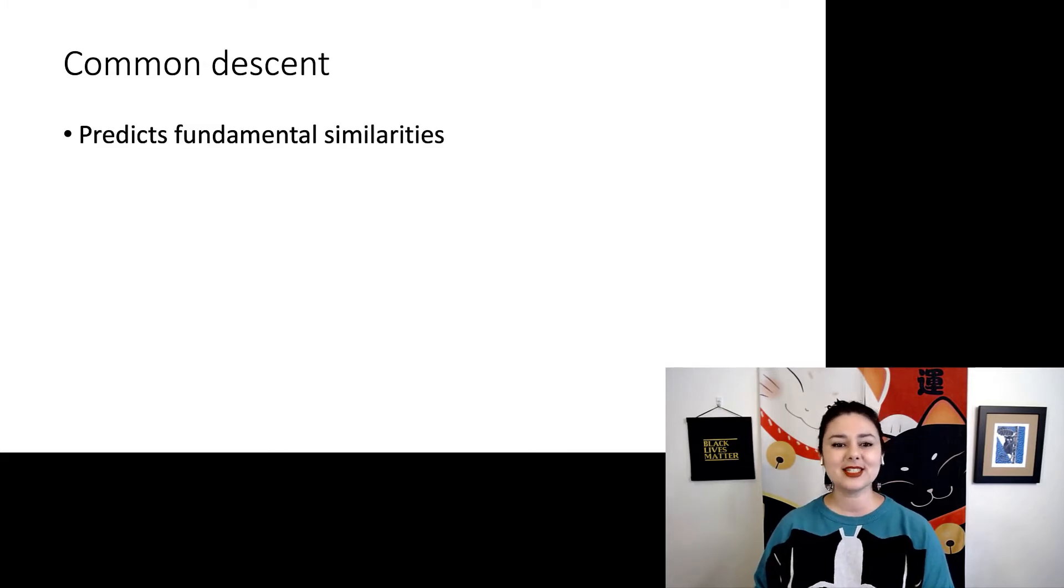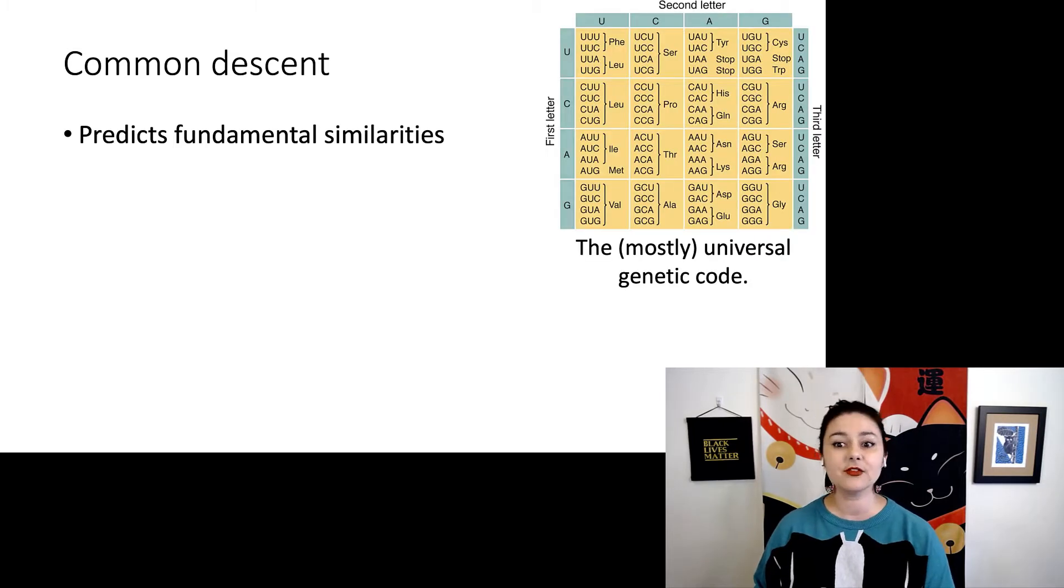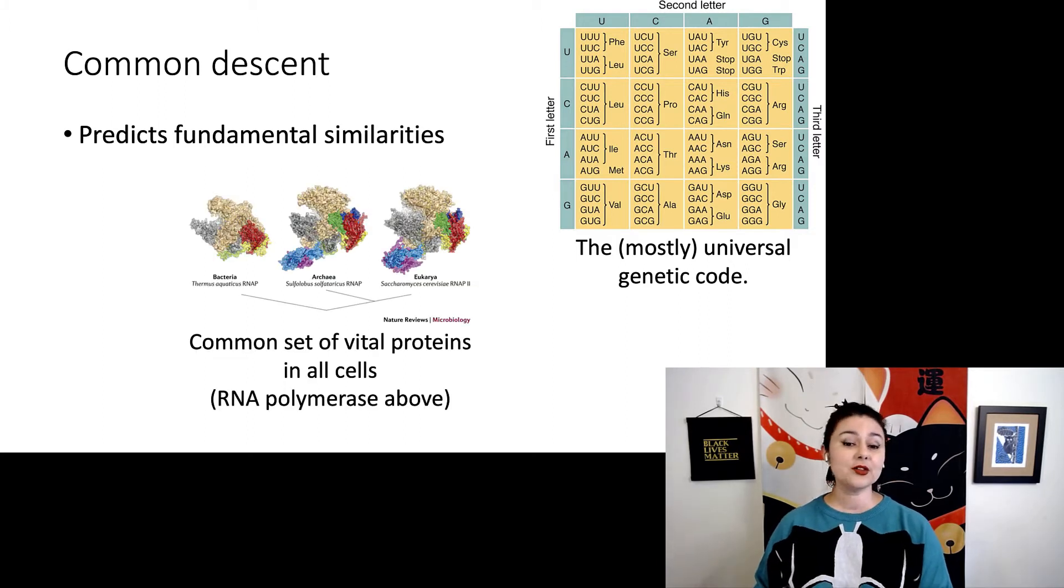Common descent also predicts fundamental similarities between all living things. First is the genetic code. It is almost universal, but there are a few groups of life that have modified it a little bit, which in itself is really interesting. We also see a common set of vital proteins. These are mostly related to basic cellular function because we all have cells as our unit of life, and they all have common needs. The one pictured here is RNA polymerase. You'll see it's slightly modified in different forms, but it is broadly similar.